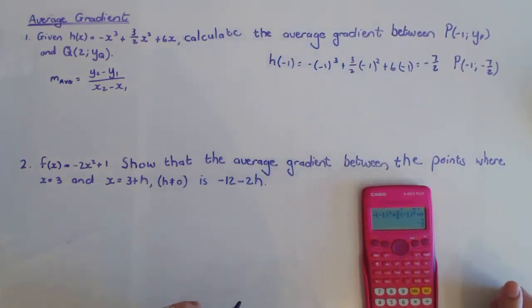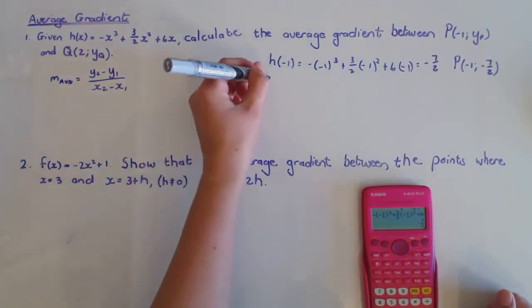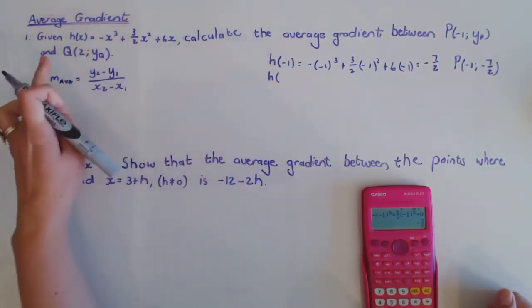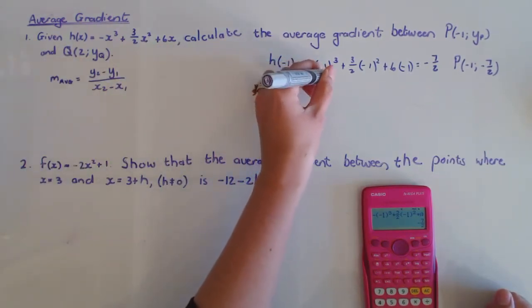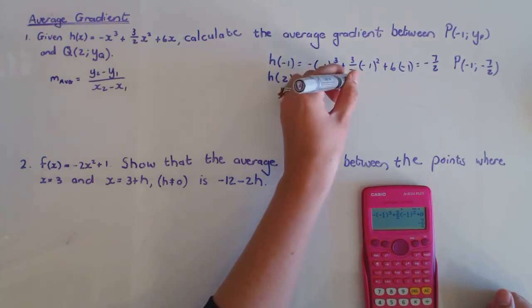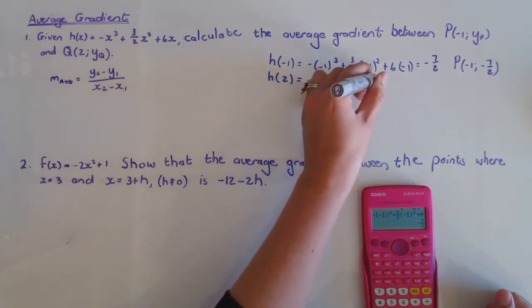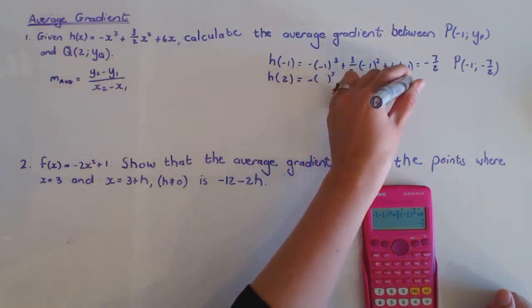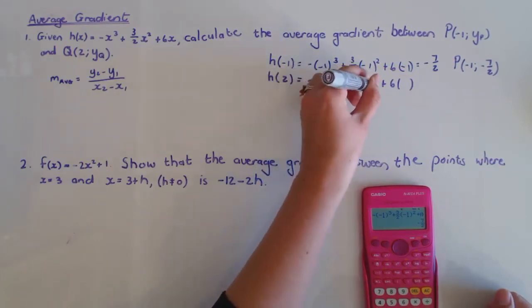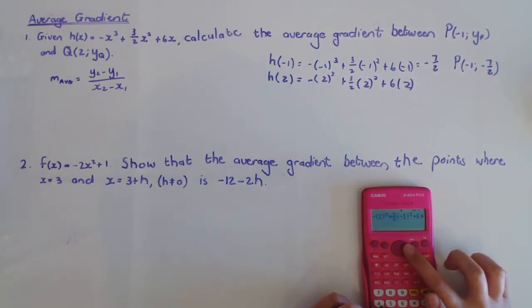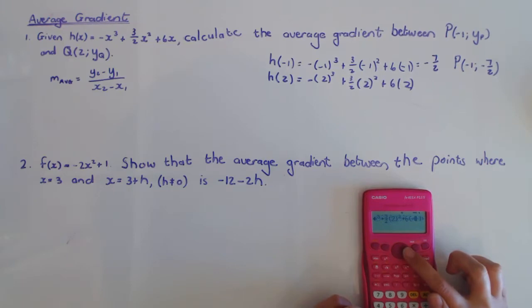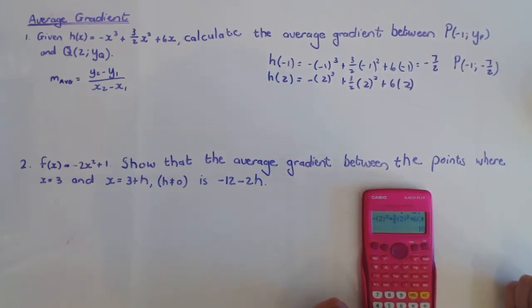And the next point I'm working with here, I'm just going to substitute 2 into the formula. So I have -x³ + 3/2x² + 6x, and I'm going to substitute 2 in there. And then if I just change all of the negative 1s on my calculator to a 2, you'll see that you get 10.